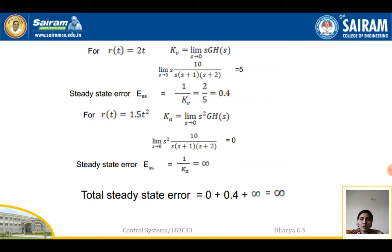For r(t) = 2t, we find the velocity constant Kv. Kv = limit s tends to 0 of s·G(s). Substituting, s cancels and the remaining is 10 divided by (s+1)(s+2). Applying the limit gives 10/(1·2) = 10/2 = 5. Therefore, e(s) = 1/Kv = (2)·(1/5) = 0.4.